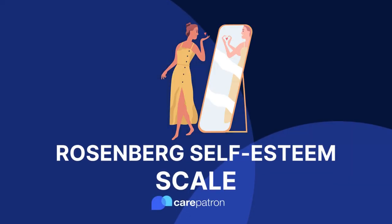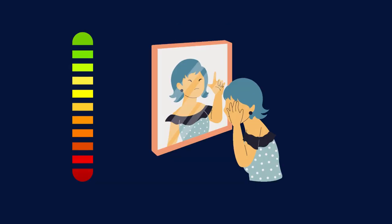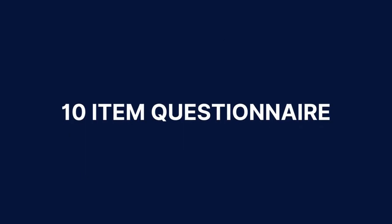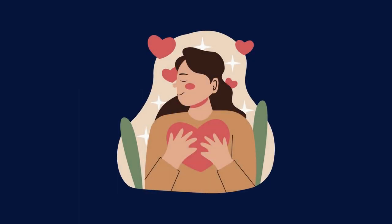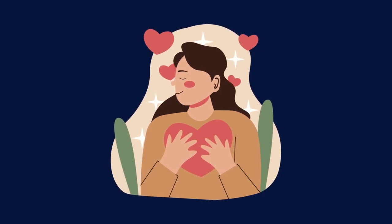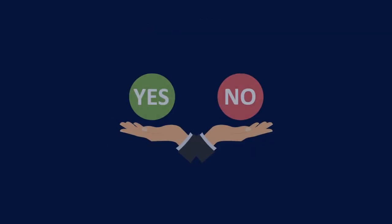The Rosenberg Self-Esteem Scale was created by Morris Rosenberg, a social psychologist, in 1965 in order to assess the level of self-esteem that a person has. It comes in the form of a short 10-item questionnaire where whoever is answering it must pick the answer that best represents them. Statements include 'I wish I could have more respect for myself' and 'I feel that I'm a person of worth, at least on an equal plane with others.'